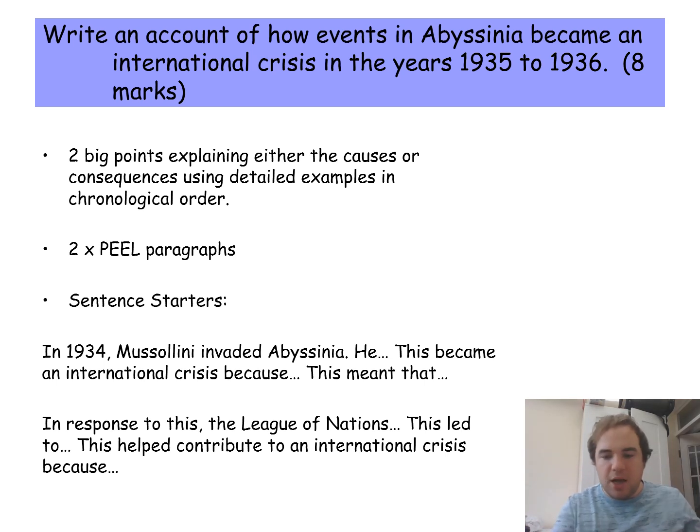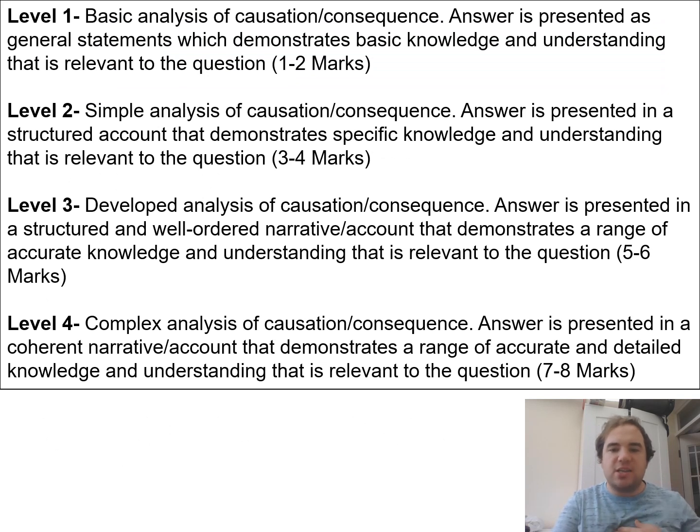Just to be clear, this is what you need to get up the levels in the mark scheme. For those of you aiming for a level four, which is seven or eight out of eight, you need to have a complex analysis of the causation or consequences of these events and make sure it's presented in a coherent narrative account. At the very least, I'd expect pretty much all of you to be able to get onto level two if you really apply yourselves.